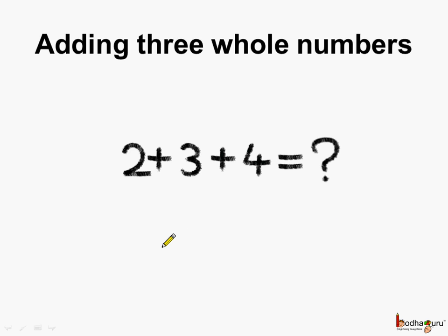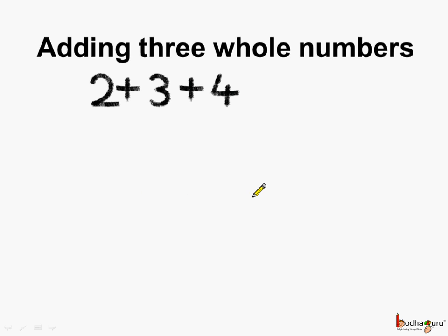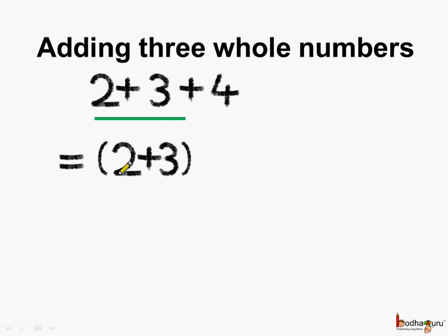Let us try adding three whole numbers. What is two plus three plus four? Let us try adding them. First, we will add two plus three. Two plus three are put under brackets to show that this operation should be performed first.